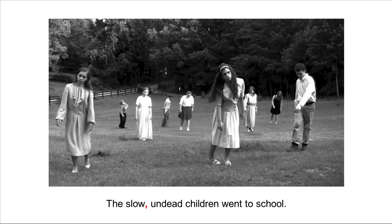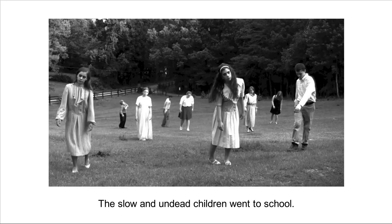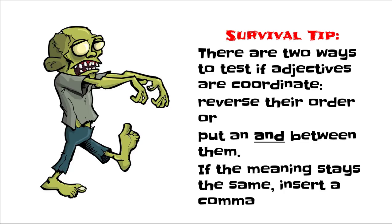To test to see if these are two coordinate adjectives — two adjectives that describe the same noun — let's simply get rid of that comma and put in the word and. The slow and undead children went to school. Well, that still makes sense. So yes, those are coordinate adjectives.